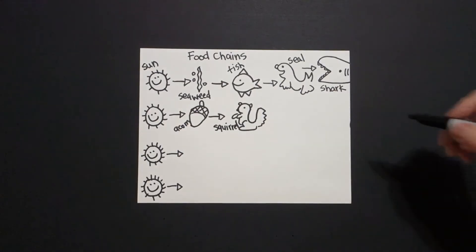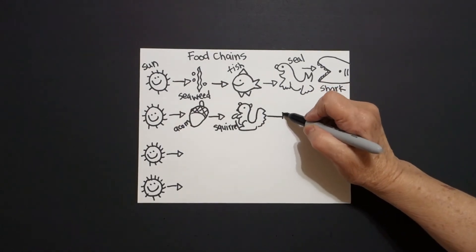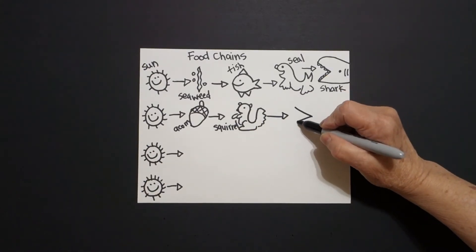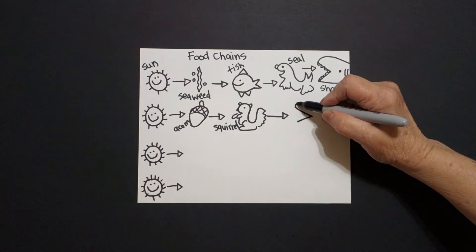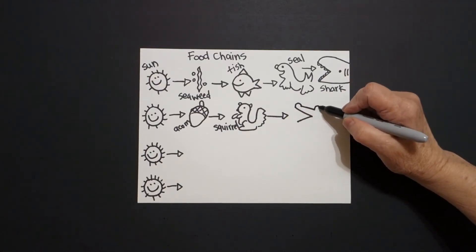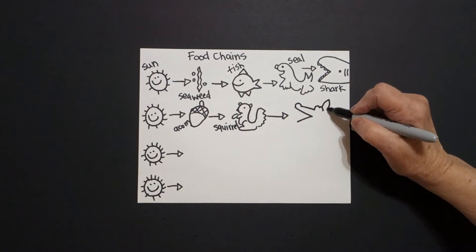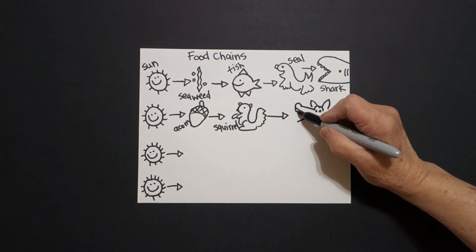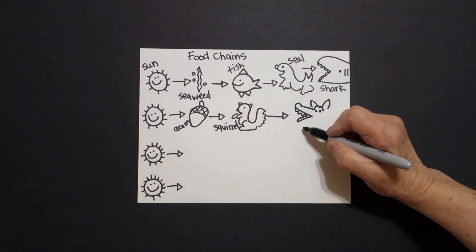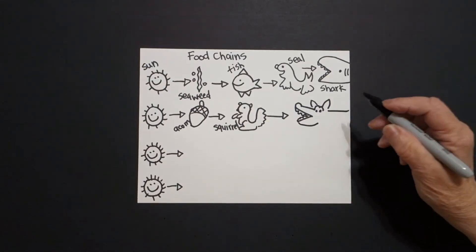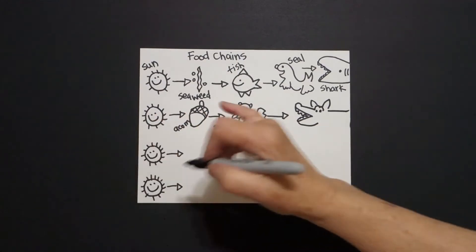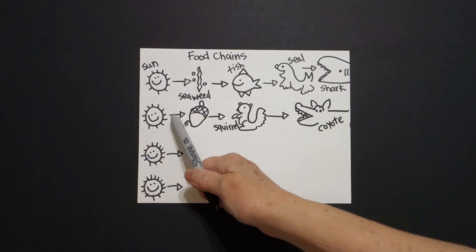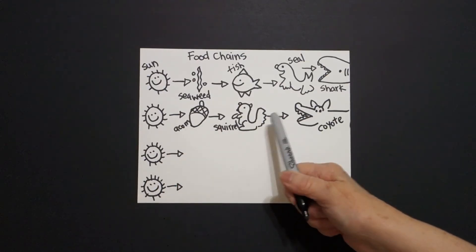Then the squirrel, with a straight line and baby triangle, becomes part of the coyote — drawn with straight diagonals, curve lines, dots, and zig-zag lines. This is a coyote. So the sequence is: sun, acorn, squirrel, coyote.